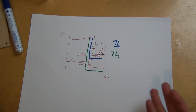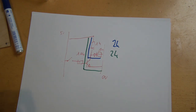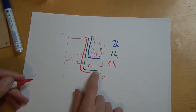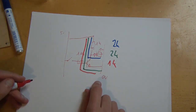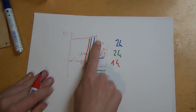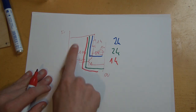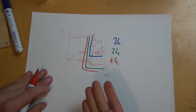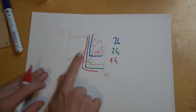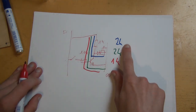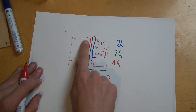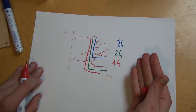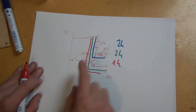A curious thing happens once we actually trigger the transistor. Once we trigger the transistor, suddenly the resistance of this path is only 1k ohm, because the transistor has almost no resistance anymore. So suddenly it's easier for the electricity to go through the resistor out to ground instead of going through the LED. Once we trigger the transistor, because this resistance is now less than the blue resistance, the current no longer actually goes through the LED.